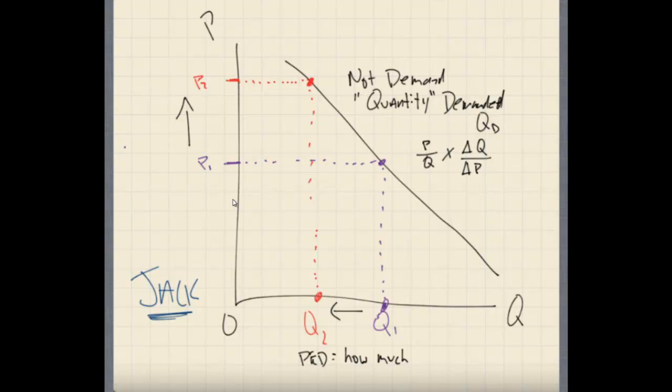Okay, so price over quantity, and this right here, this is our initial price, our initial quantity, times our change in quantity over change in price. So let's plug some numbers in, let's do some examples here of what would be something that we'd have. Let's say that we took, we'll go over here, we're going to do this over here.